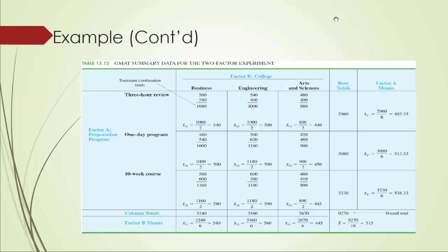This table shows summary data for the two-factor GMAT experiment. In each of the nine cells, we have a mean for each treatment combination. In the last column, we have the means for factor A. For example, 493 is the average GMAT score for all six students who went through the three-hour review program. In the last row, 540 is the average GMAT score for all six students from the College of Business. And the overall grand mean is 515.